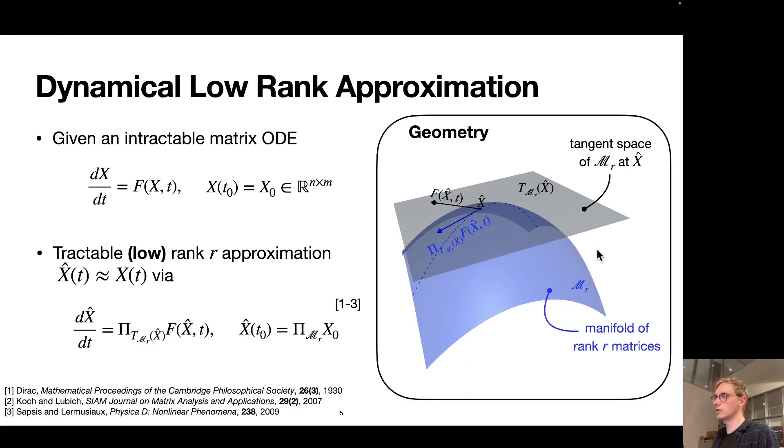In general, of course, the dynamics will point out of the manifold of rank R matrices, meaning that the true solution of our model or the true data actually does not live directly in the manifold of rank R matrices but is somehow higher dimensional. So in order to update our low-rank approximation, we will instead evolve it according to the projection of the true dynamics onto the tangent space of the rank R matrix manifold. That way we ensure that our approximation remains low rank and at the same time, in a certain sense, minimize the error that we accumulate in the process of making that update.